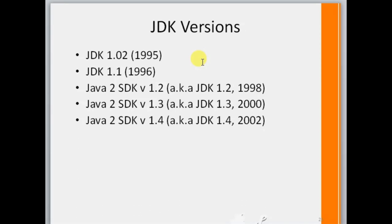If we talk about Java Development Kit — JDK — there are many versions of Java like JDK 1.01 which was released in 1995, JDK 1.1 which was released in 1996, and so on. Java Development Kit is nothing but a software package that allows us to run Java programs.